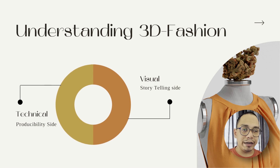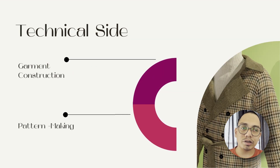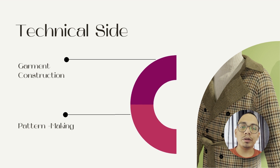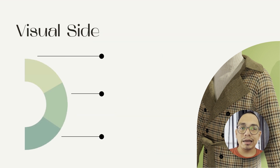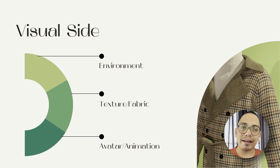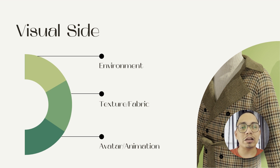3D fashion is divided into two parts: the technical side and the visual side. The technical side is about garment construction and pattern making, and we cover this with Clo3D. The visual side is about creating environments, developing fabrics, avatars, and animation, and this part we cover with Blender, DAZ Studio, MakeHuman, Maximo, and different other techniques to make our garments look much more realistic.